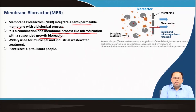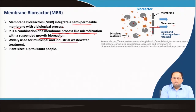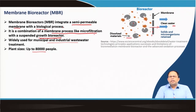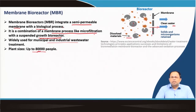The membrane process is like a microfiltration, and the membrane is suspended in a bioreactor — this is a combination of a membrane process like microfiltration with a suspended growth bioreactor. MBRs are widely used in municipal and industrial wastewater treatment, and plant sizes can treat wastewater from around 80,000 people.